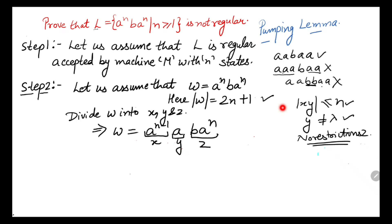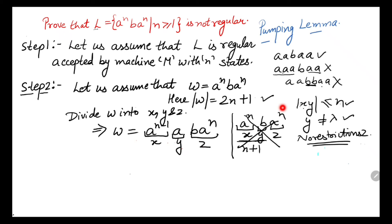Some students feel we can divide the string simply as x equals a raised to the power n, y equals b, z equals a raised to the power n. However, in this case the length of xy would be n plus 1, which violates the condition that |xy| must be less than or equal to n. So we cannot divide the string this way. Dividing as a raised to the power n minus 1 followed by a is always the correct approach.